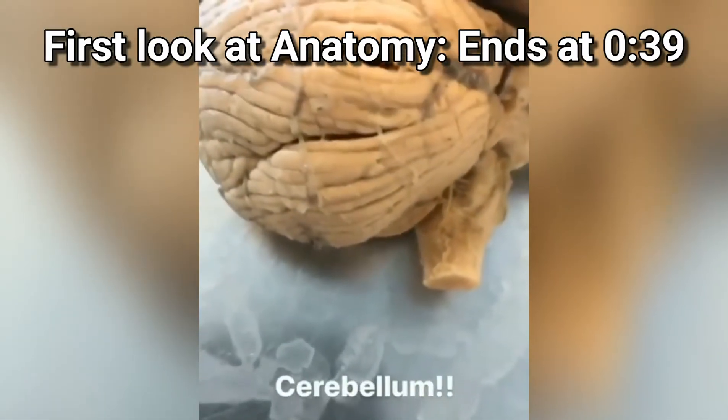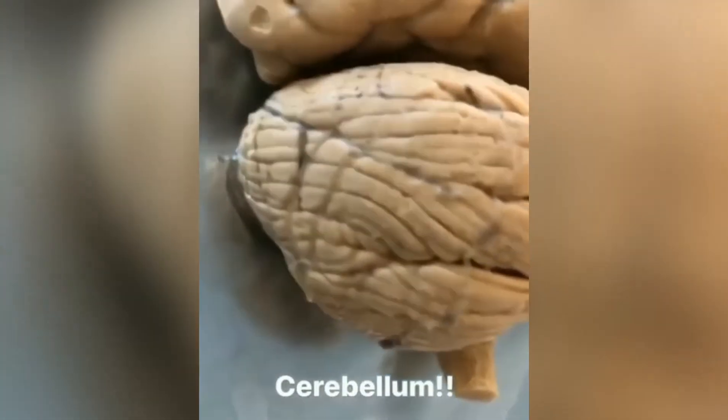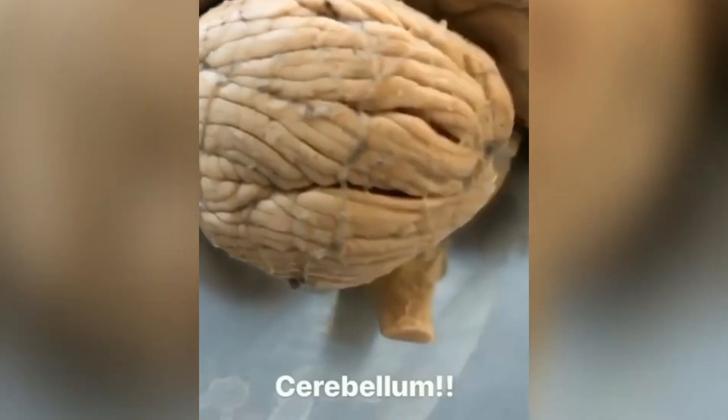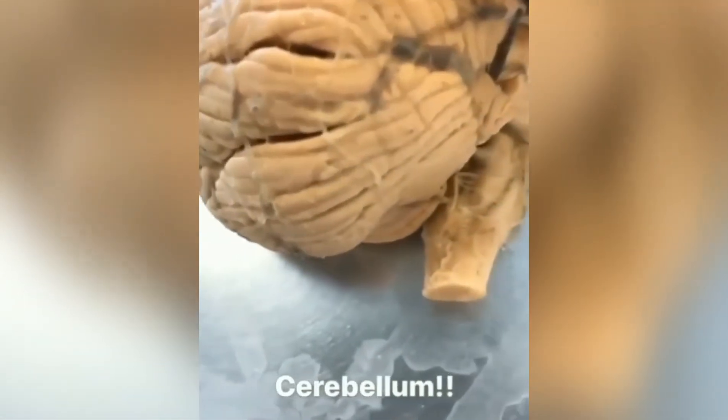Look at this amazing structure called the cerebellum. You can see all these folds to help increase the surface area because this thing actually contains nearly half of the brain's neurons.